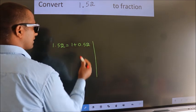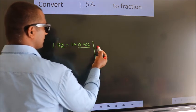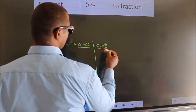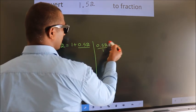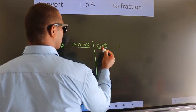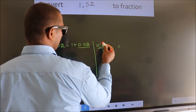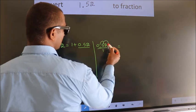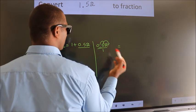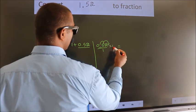Next, convert this to a fraction. That is 0.52. To convert this to a fraction, we have to move the decimal after two numbers. For that, multiply it with 100.